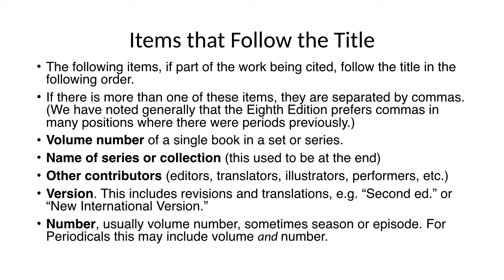Following items are part of the work being cited, placed after the title and before the publisher. If there's more than one of these, they are separated by commas. First, the volume number of a single book in a set or series. Then, the name of a series or collection — this is a change, as these used to come at the end of the entry but now come after the title. Other contributors — editors, translators, illustrators, performers. Then the version, which includes revisions and translations such as second edition, revised edition, or new international version. Followed by the number, usually a volume number, but sometimes a season or episode. For periodicals, this may include volume and number.